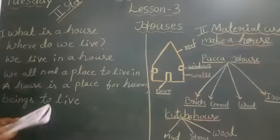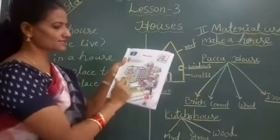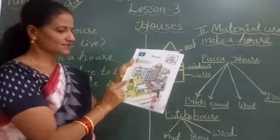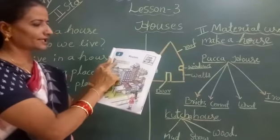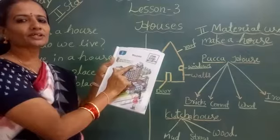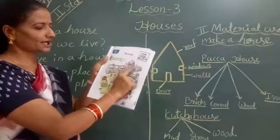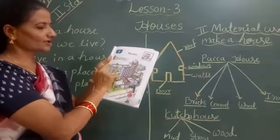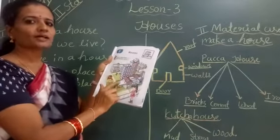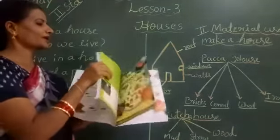Take out your textbook, children. See lesson number 3, houses. See here, they gave one picture. Here are some different types of houses. Tick the house type that you live in. In which house are you living? See, they gave 4 houses — 1, 2, 3, 4. Which house are you living in? We have to put a circle. Turn the page.